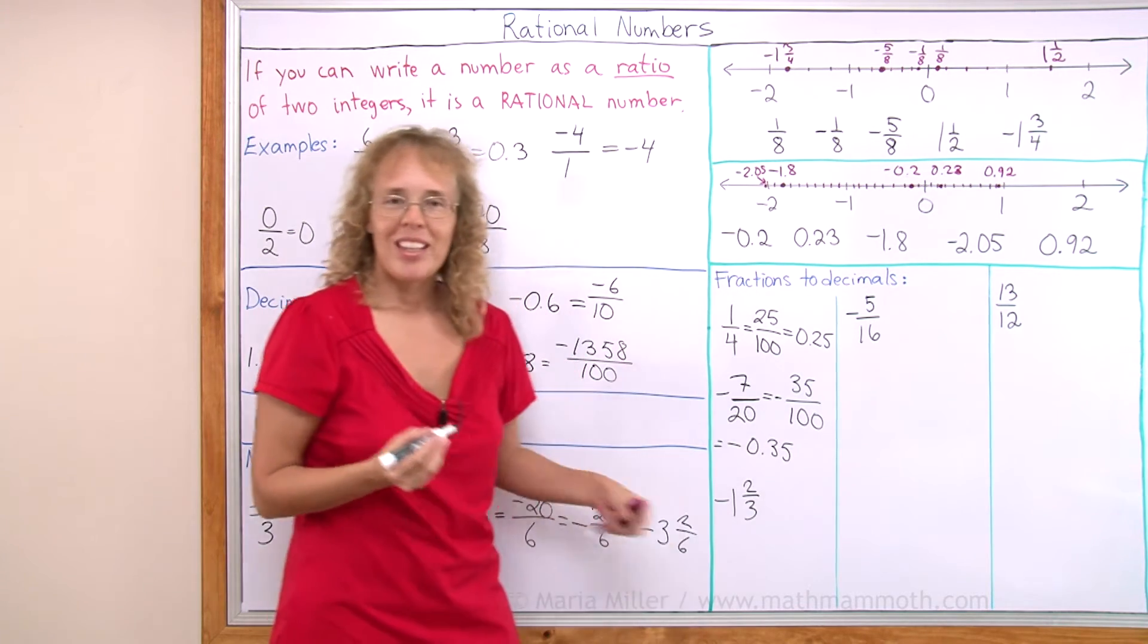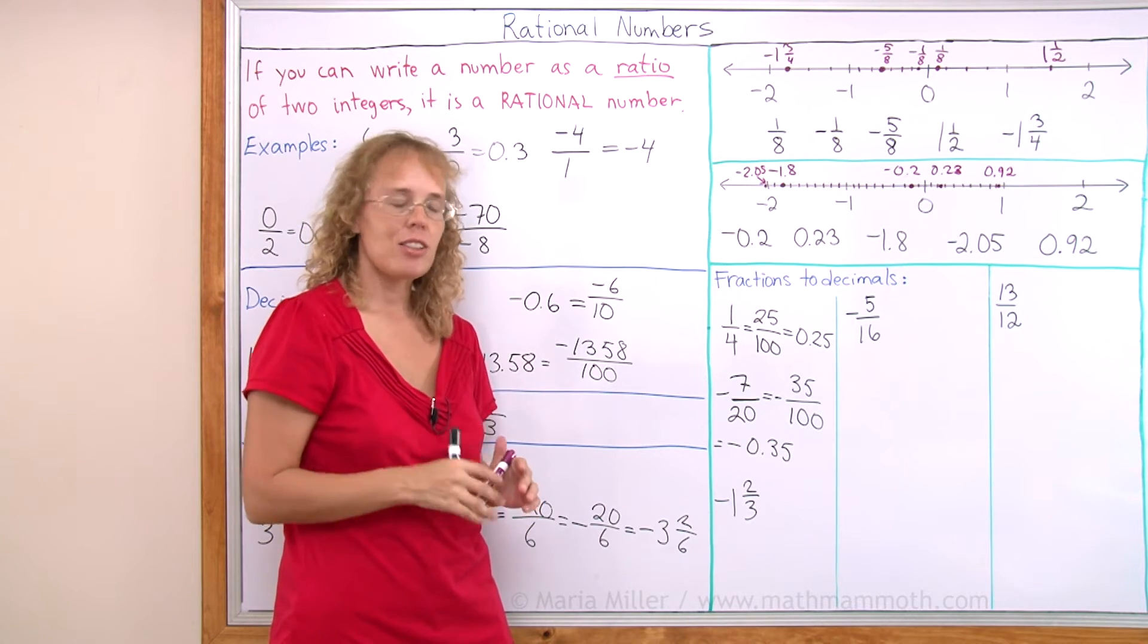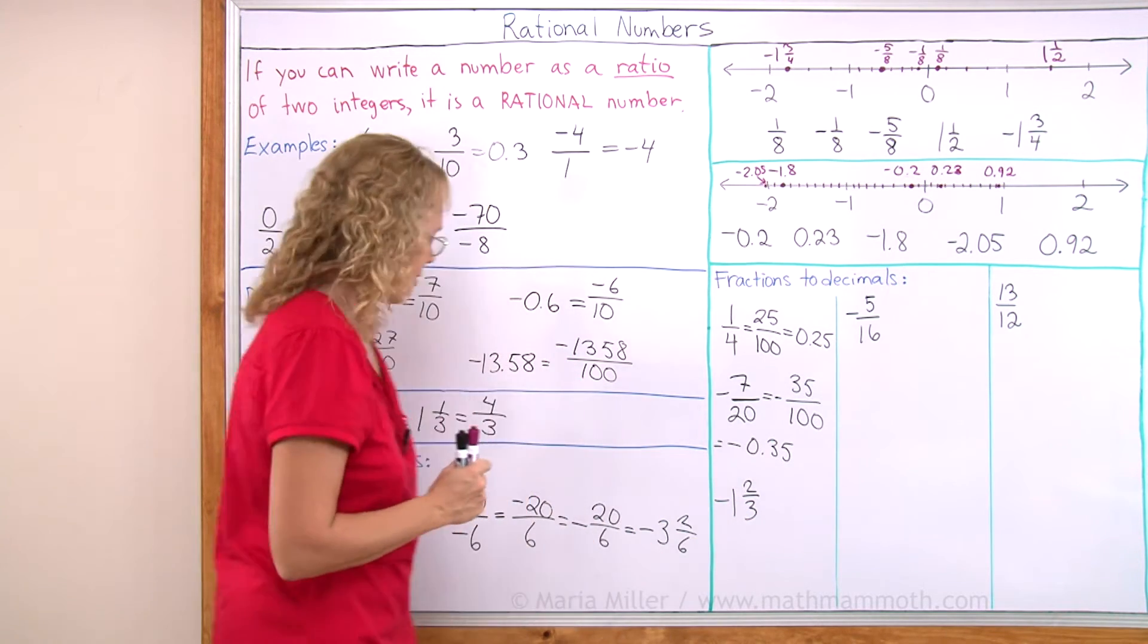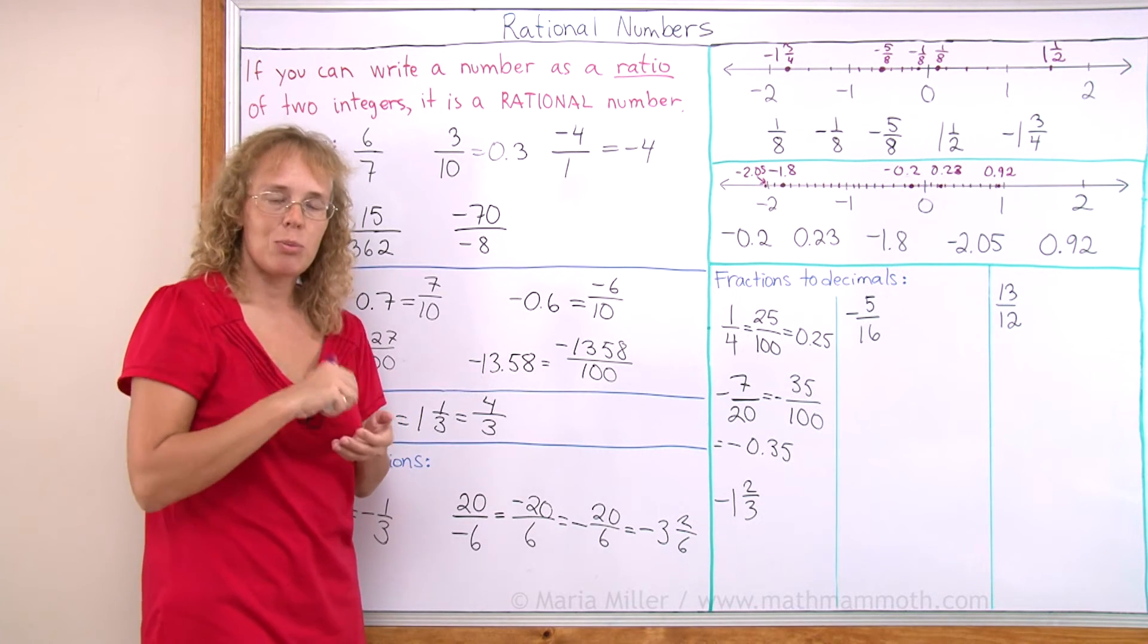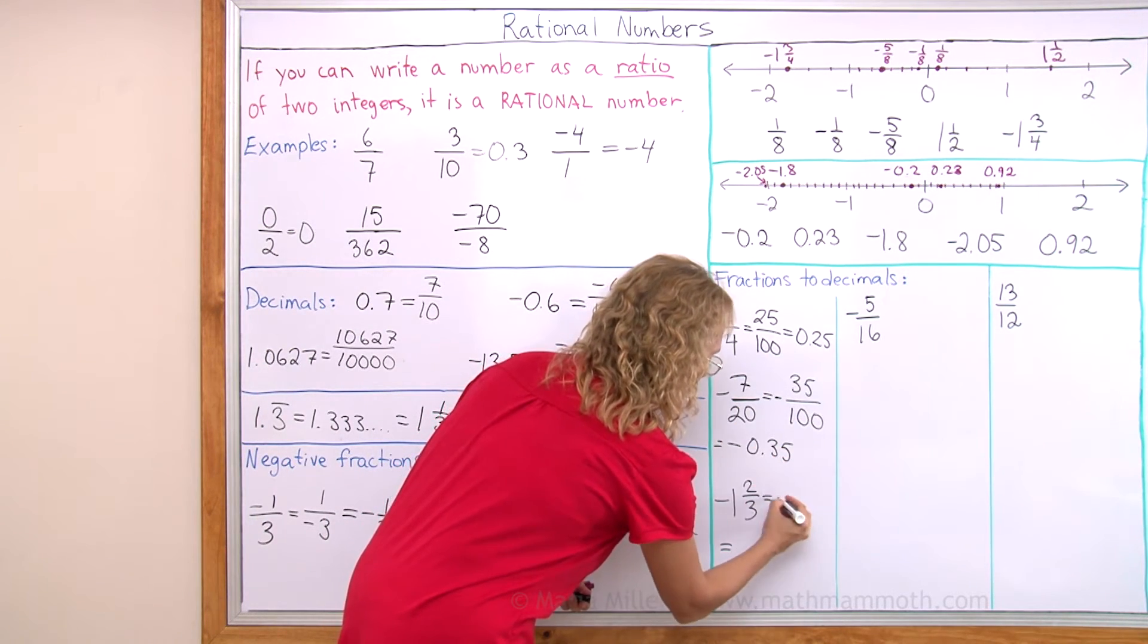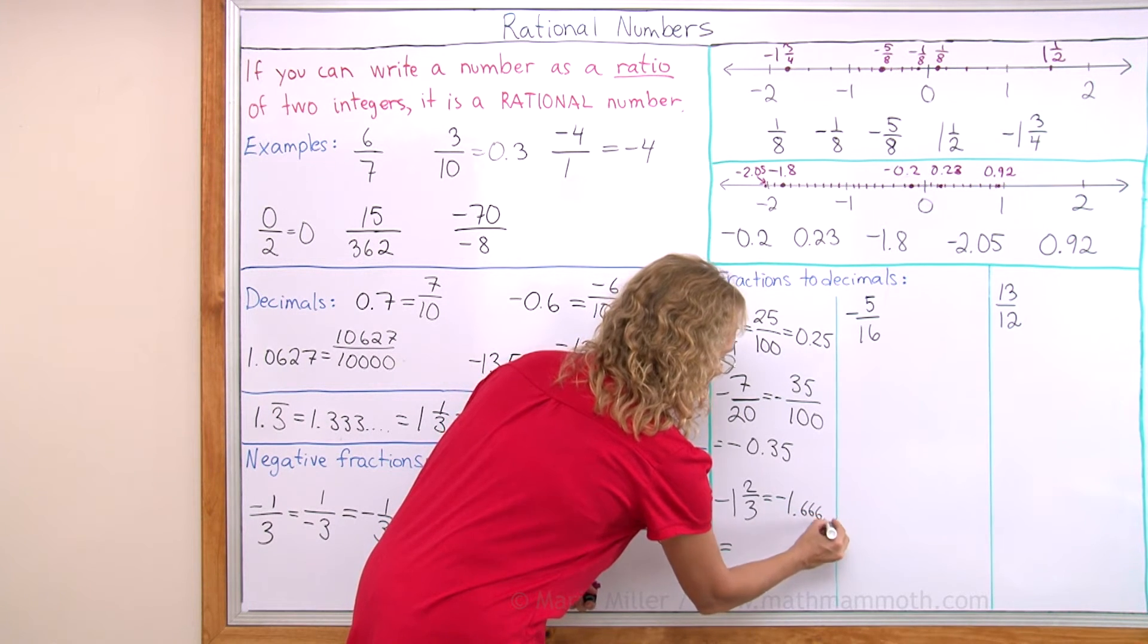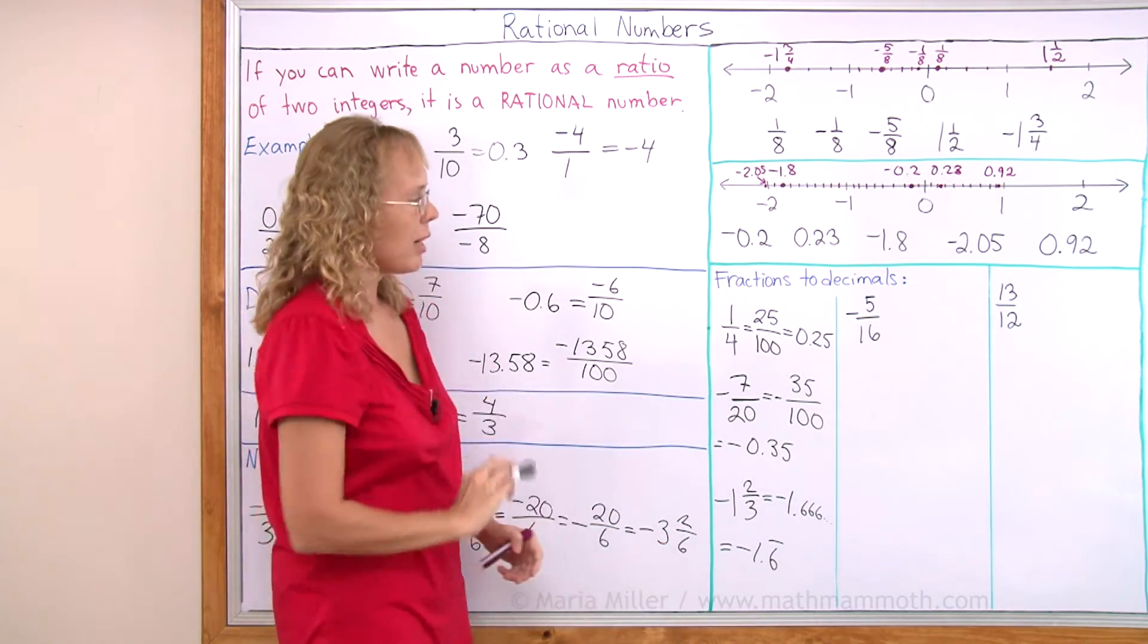This one here. Okay, this does not, 3 does not go evenly into 100 or 1000 or anything. But if you remember, 1/3 was 0.3333... 2/3 is 0.6666 repeating with sixes. So this ends up being negative 1.666 repeating sixes, or negative 1.6 with a bar on top to indicate the repeating part.